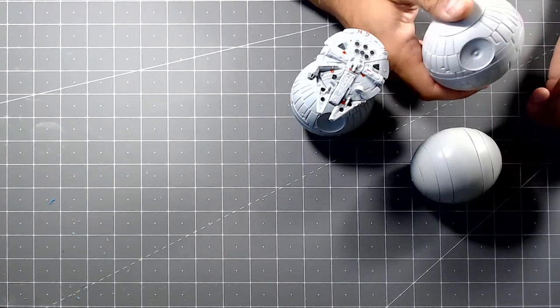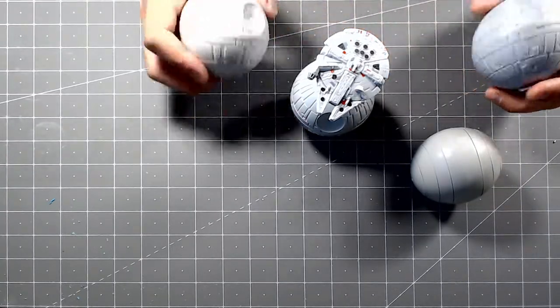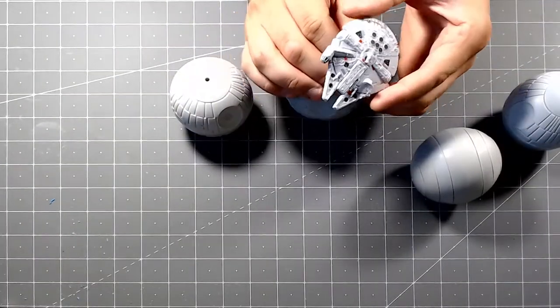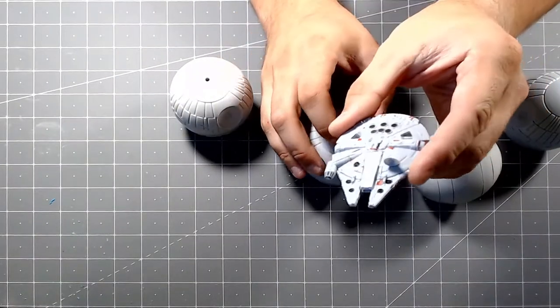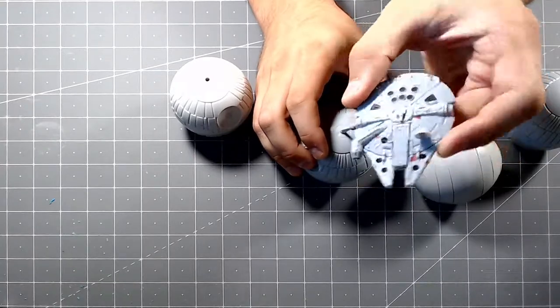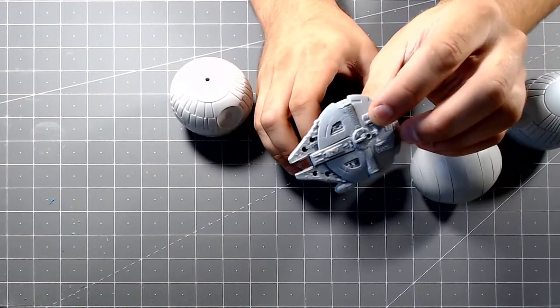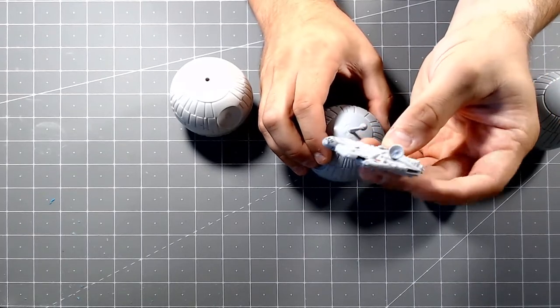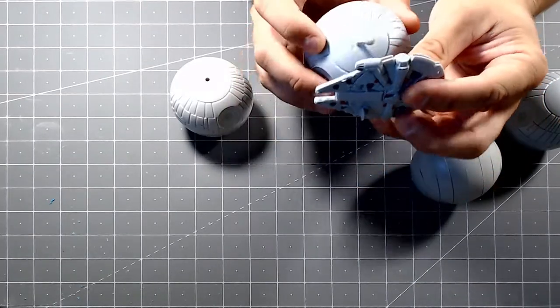These are Death Stars and inside each of them is some kind of ship. They're about the size of Micro Machines, maybe slightly larger scale. They come in a bunch of pieces and you assemble them. I've already built this one here, it's a Millennium Falcon.